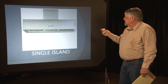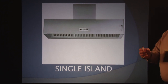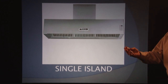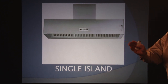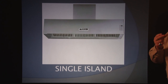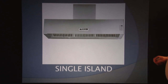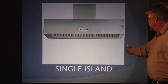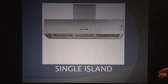We've got a single island canopy hood, and this is basically for a single appliance or one row of appliances. The single island canopy hood is placed over that single appliance. It doesn't do anything but service that one piece, or that one row of pieces, however many you can fit in that particular area.